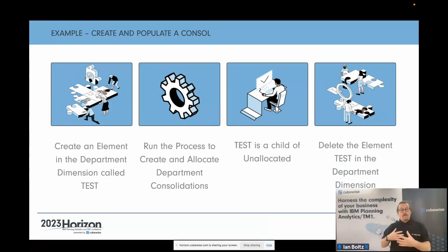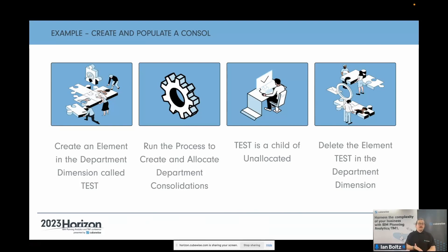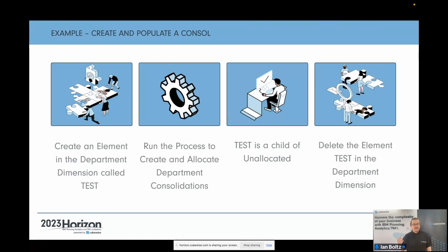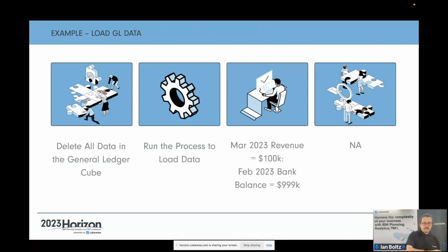A couple of test examples: for populating a consolidation element in a dimension, the setup would be creating an element in the department dimension called 'test'. Then you run your process — the thing you're testing — which allocates leaf-level elements to consolidations. The assertion is: is this test element a child of the unallocated consolidation? That's true or false. The cleanup would be deleting that element from the department dimension because it's not supposed to be there.